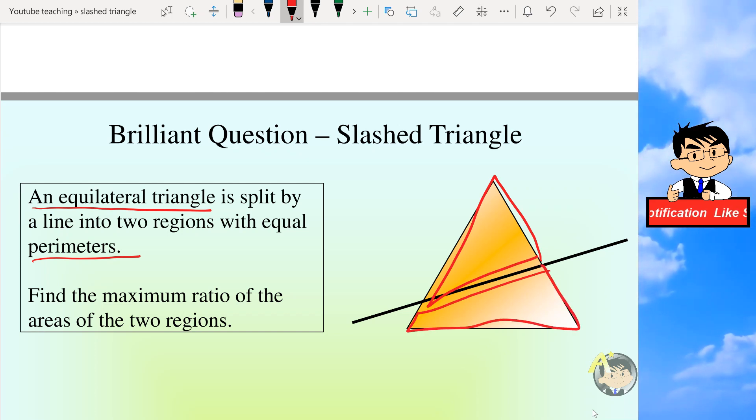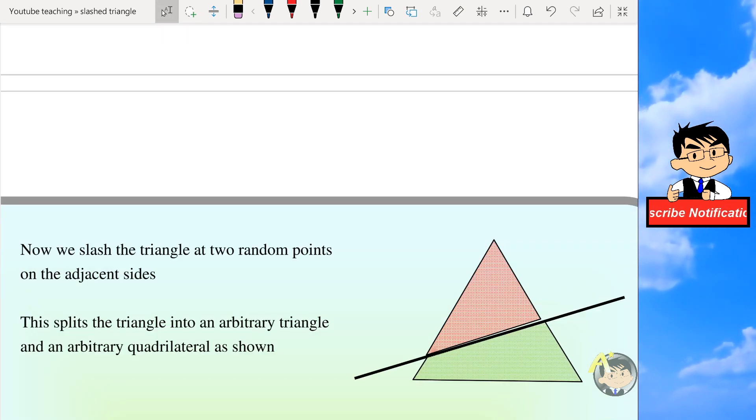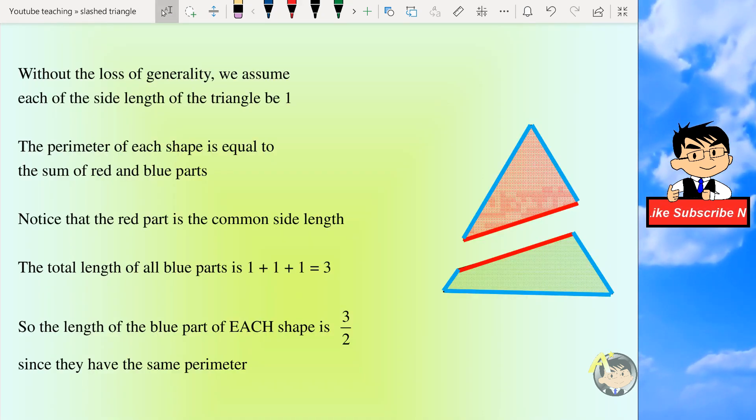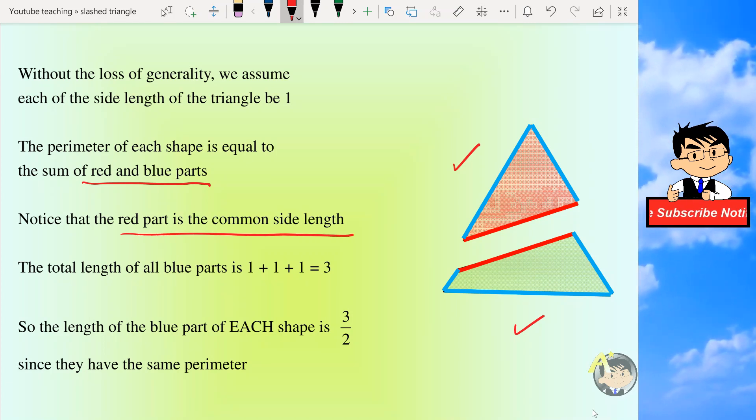Now we will cut the triangle at two random points on the adjacent sides. Without loss of generality, we will assume each side length of the triangle to be one, because the ratio for smaller and larger equilateral triangles will be the same. So the perimeter of each shape is equal to the sum of the red and blue parts, which is here. Notice that the red part is the common side length.